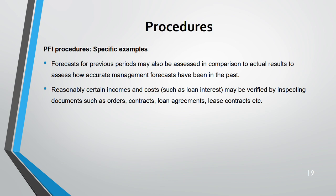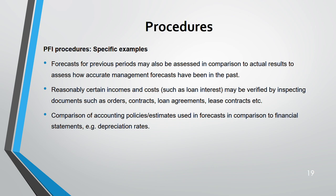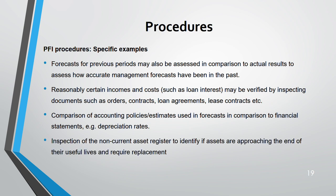For reasonably certain income and costs, verify them by inspecting documents — for example, loan interest is easy to verify by inspecting loan agreements, lease agreements, and contracts. Compare accounting policies used in the current forecast to those of the last year — for example, the depreciation rate is an accounting estimate that should be consistent.